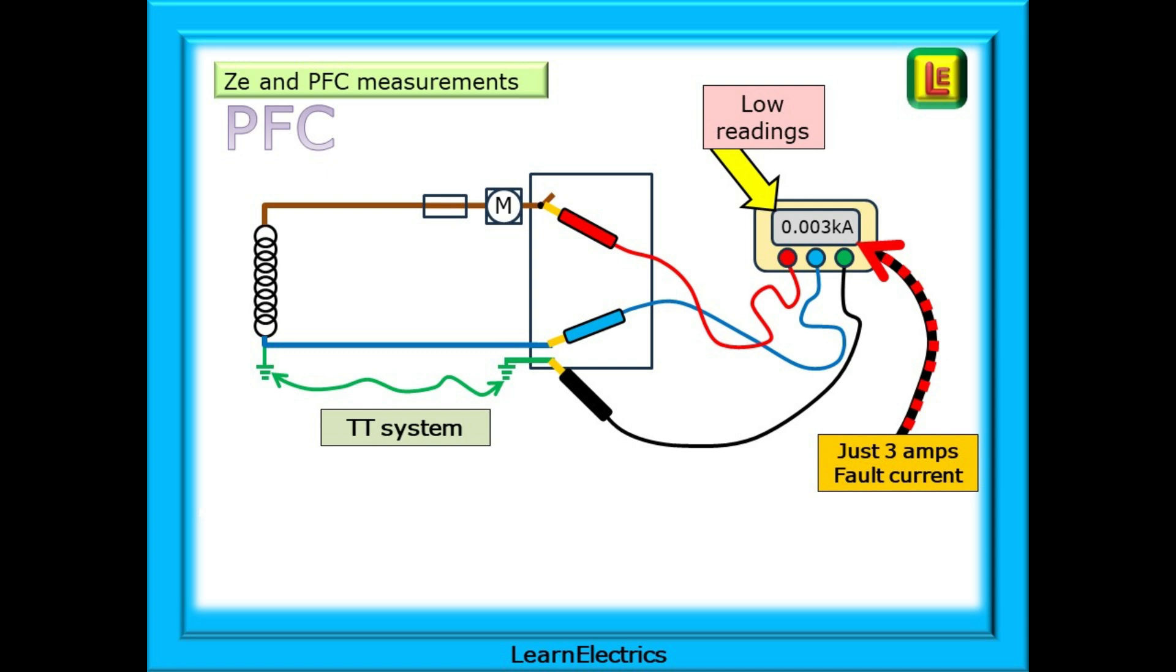This time the reading is 0.003 kiloamps. Your assessor may well ask you to convert this reading of 0.003 kiloamps into amps and to comment on it. This is just 3 amps and can be explained because it is a TT system with a high ZE reading. The ZE is going to be 240 volts divided by 3 amps or about 80 ohms of resistance and this is about right for a TT system.